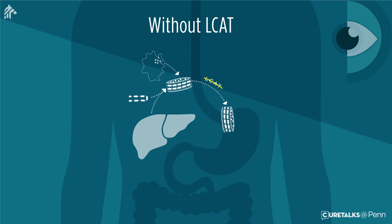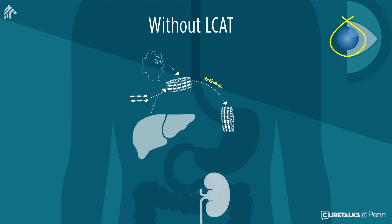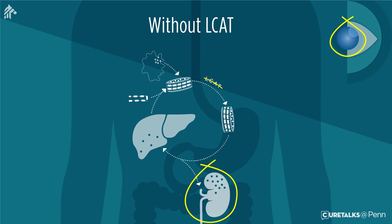There are two organs where cholesterol is deposited in great amounts, creating damage. Cholesterol gets deposited in the cornea of the eye, which starts getting cloudy, giving the eye a bluish-gray hue. If this is the only sign, it is called fisheye disease. The other organ is the kidney — excess cholesterol deposited there creates a toxic environment for kidney cells, leading to chronic kidney disease and renal failure. Too much cholesterol may also deposit within the membrane of red blood cells, causing their breakage and anemia.